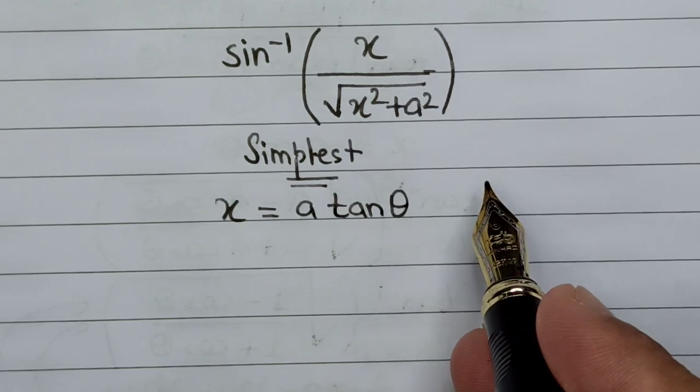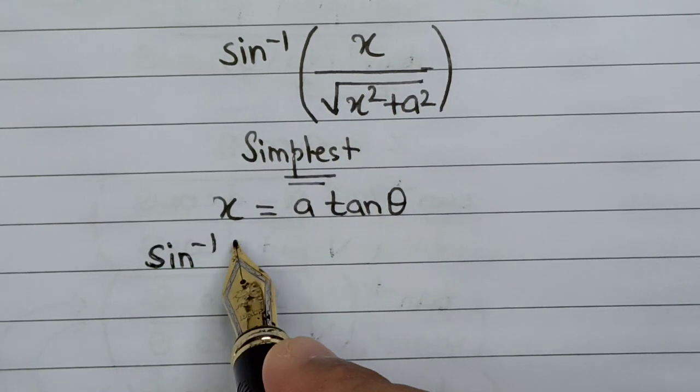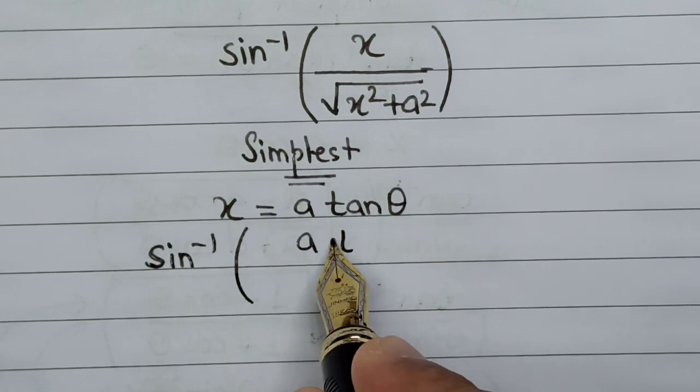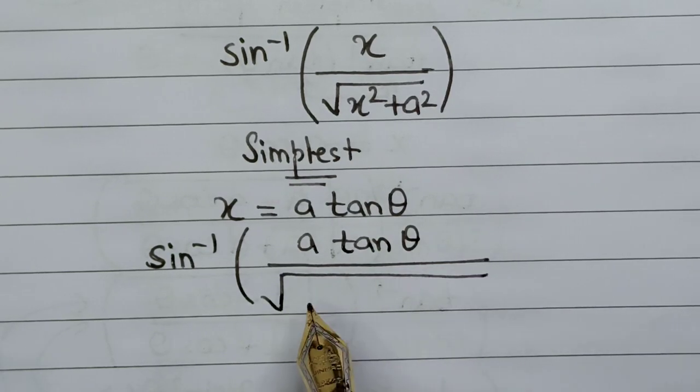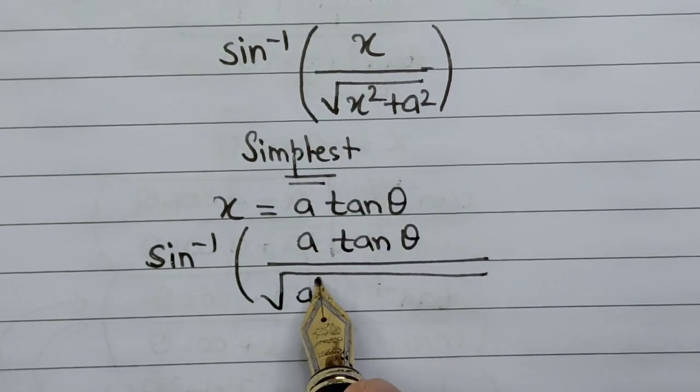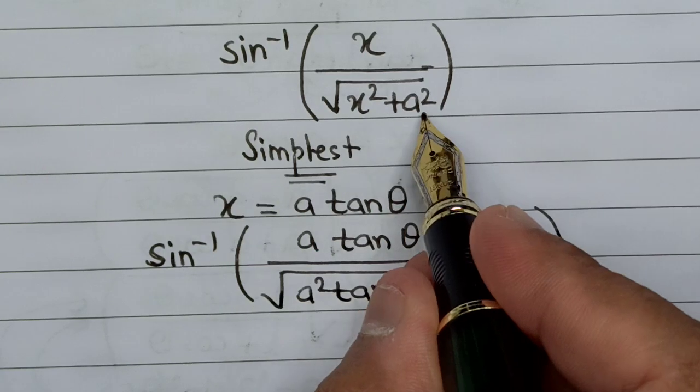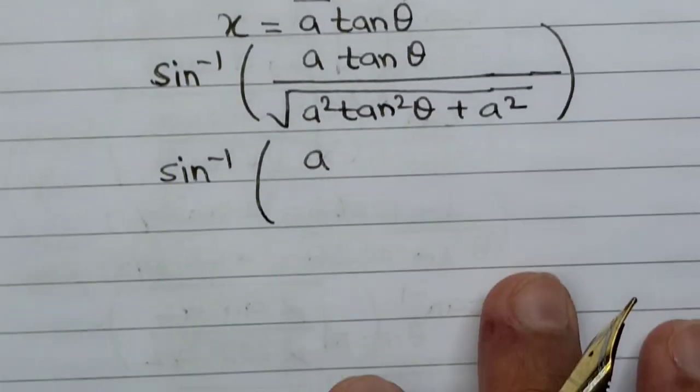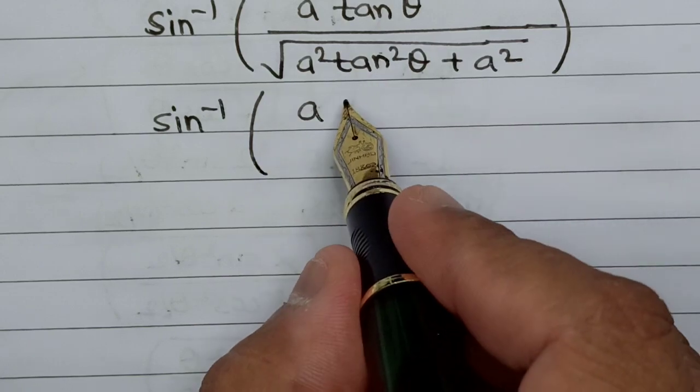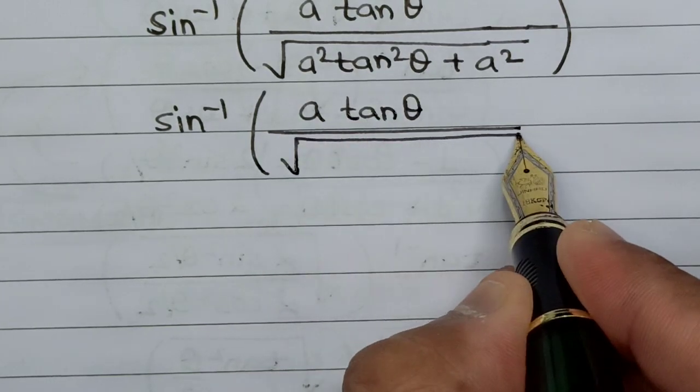As soon as we take the value of x as a tan theta, then this entire question will get converted into sine inverse of a tan theta divided by square root of a squared tan squared theta plus a squared.